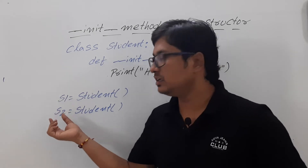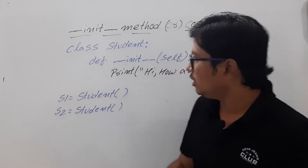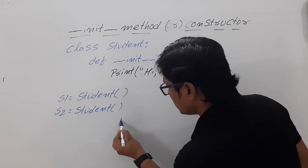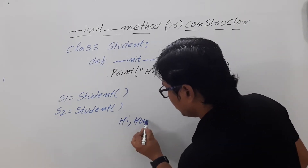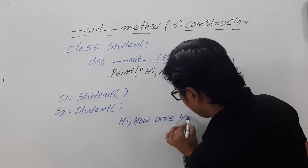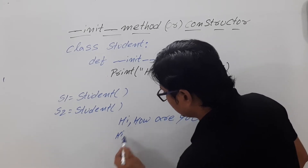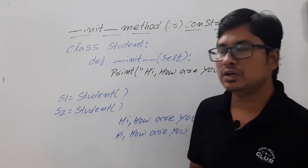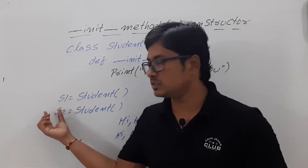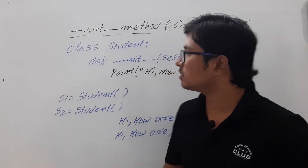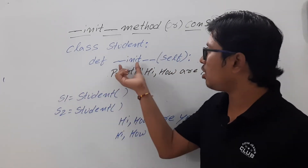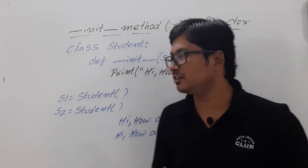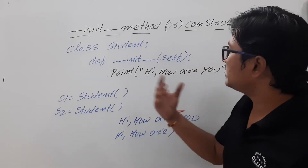Since __init__ is a constructor, once you create an object the __init__ method will be called automatically — you do not need to explicitly call it. When you run this program you will get 'Hi, how are you' printed twice, because you created two objects. Once you create an object of the Student class, the __init__ method is automatically invoked.